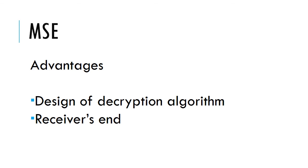There are two main advantages of finding the Mean Square Error. The first is to find the correctness of the decryption algorithm. The second is to find if the original image has been retrieved at the receiver's end without any distortion. In the next video we'll see how to calculate PSNR.